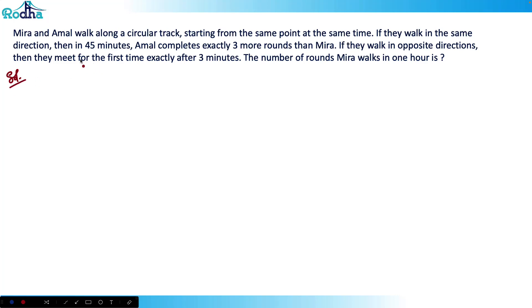Let's look at this question from CAT 2021 Slot 3 — a question from circular track, a good question from arithmetic. It says that Mira and Amal walk along a circular track, starting from the same point at the same time. If they walk in the same direction, then in 45 minutes Amal completes exactly three more rounds than Mira. If they walk in opposite directions, they meet for the first time exactly after three minutes. The question asks for the number of rounds Mira walks in one hour.